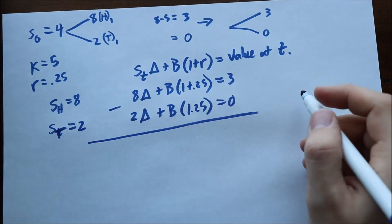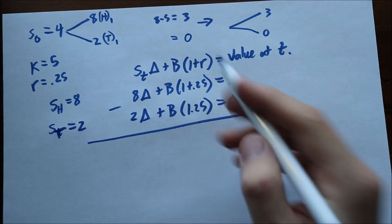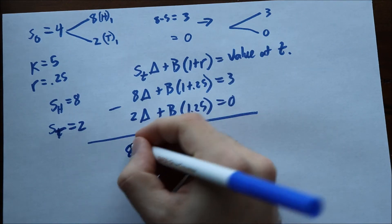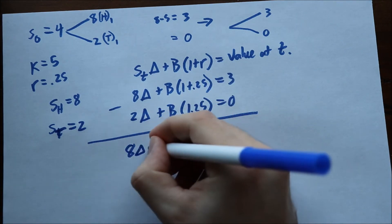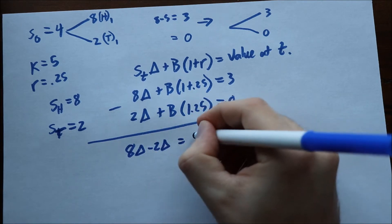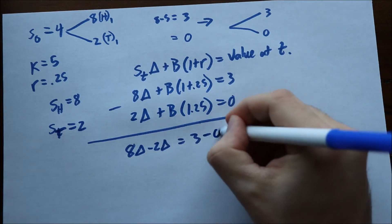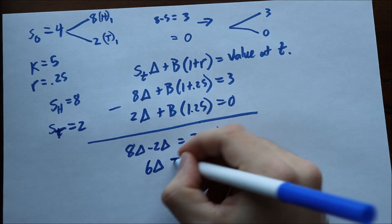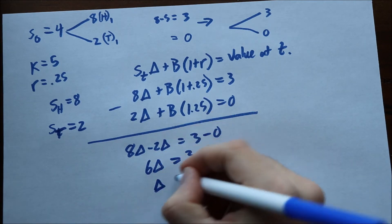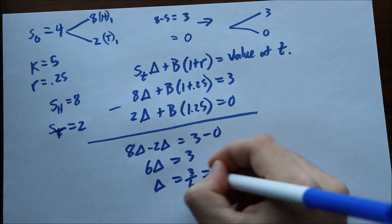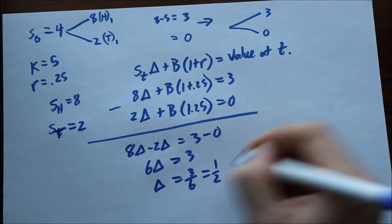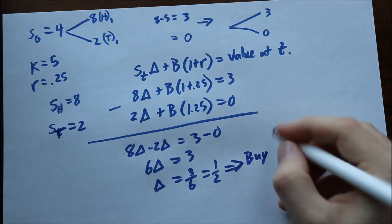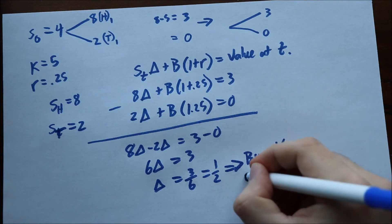Subtracting the two equations: 8 delta minus 2 delta equals 3 minus 0. This simplifies to 6 delta equals 3, so delta equals 3/6, which is equal to 1/2. This means you need to buy half of a stock.